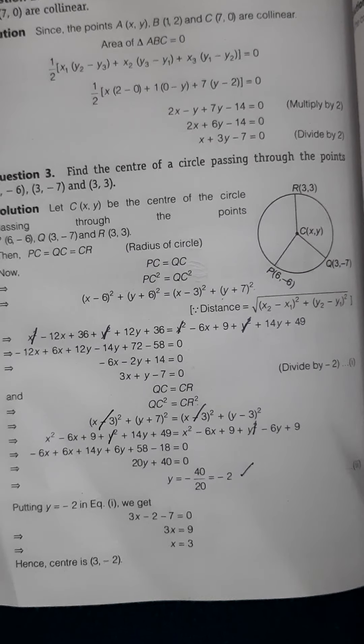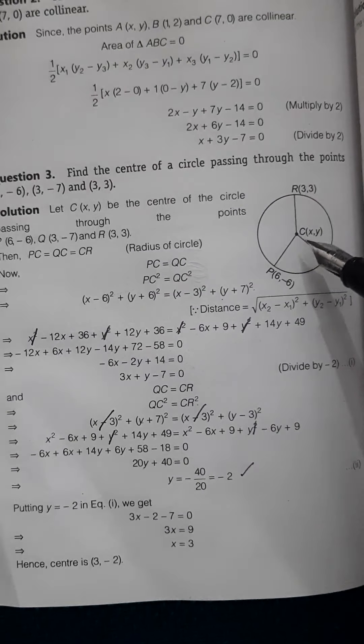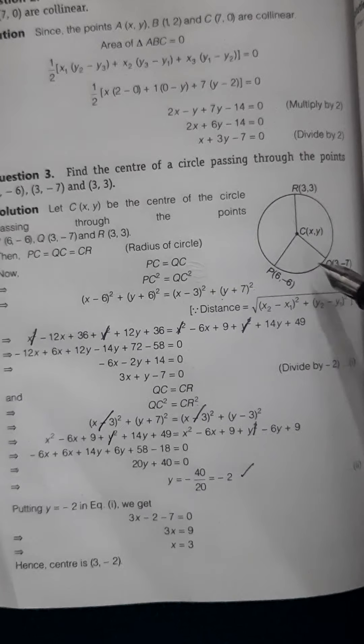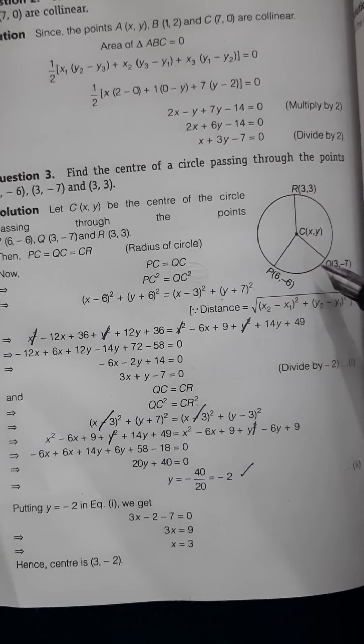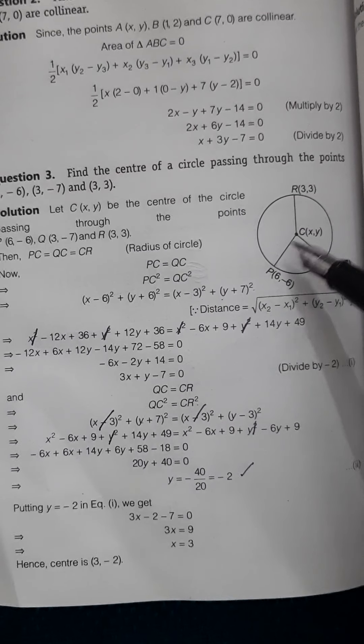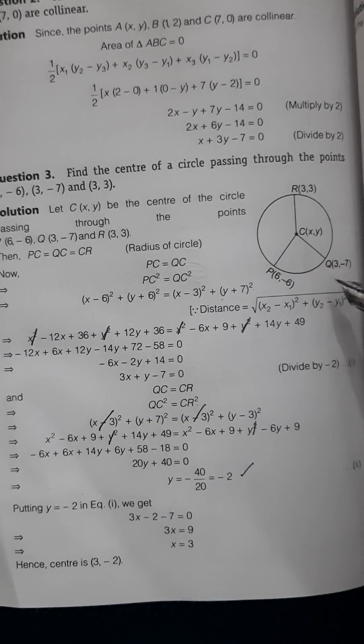What we have done here is equated CP and CQ. When I equate CP and CQ, we're going to use the distance formula. This will become (x - 6)² + (y + 6)² equal to (x - 3)² + (y + 7)².